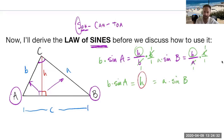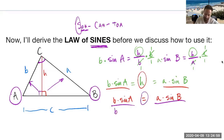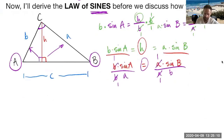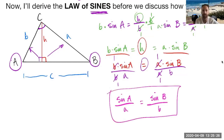Since H is the same length in both, we know those two things are equal. So I'm going to set them equal to one another: b·sin(A) = a·sin(B). Then I'll divide both sides to get the sines by themselves — dividing by b on the left and by a on the right — and what we're left with is sine of angle A over side a equals sine of angle B over side b. And that, my friends, is what is called the law of sines.